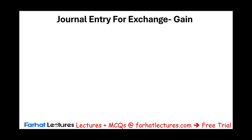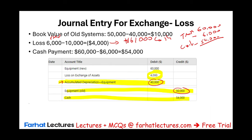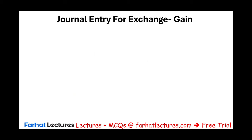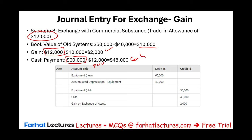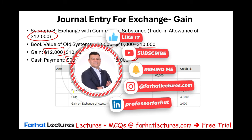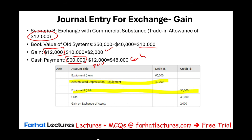Under scenario two, the seller gives twelve thousand for the old system, so the fair market value is twelve thousand while the book value is ten thousand — resulting in a gain of two thousand. Since the new system costs sixty thousand and the trade-in is worth twelve thousand, you only pay forty-eight thousand in cash. The journal entry: debit new equipment sixty thousand, debit accumulated depreciation, credit the old asset at cost, credit cash forty-eight thousand, and credit the gain of two thousand.